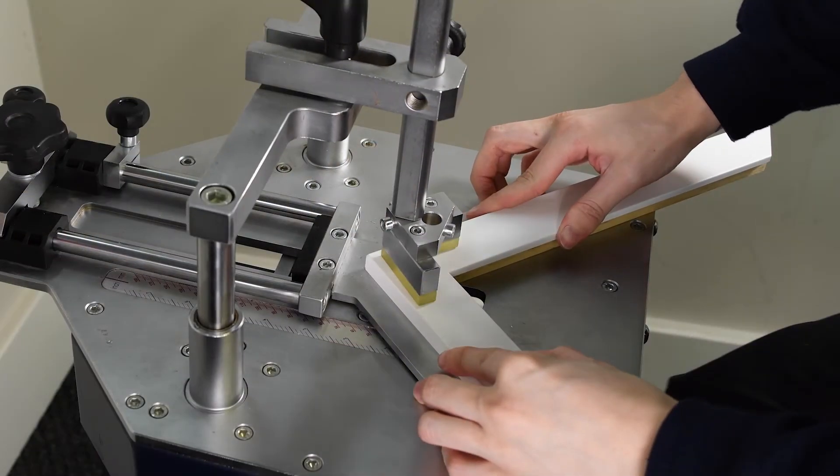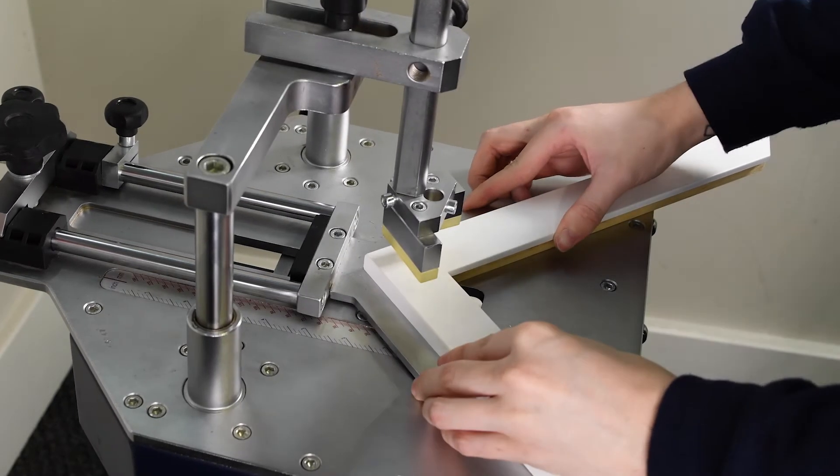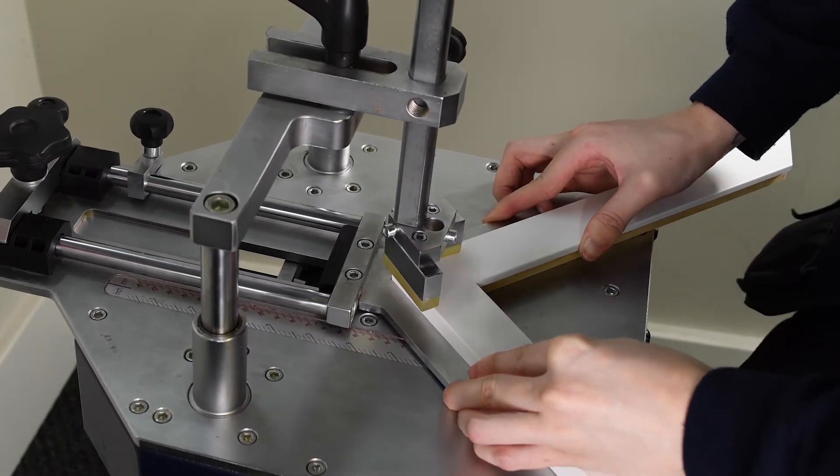While holding the moulding in place, insert the first nail then slide the fence to the next position to insert the next nail.